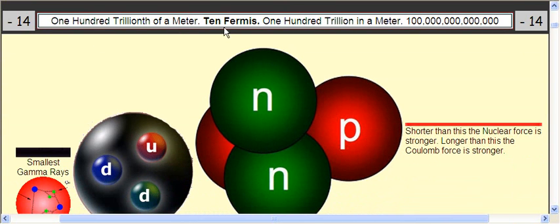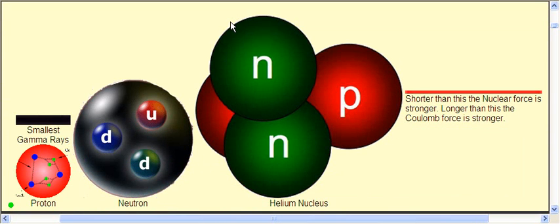One hundred trillionth of a meter — let's go to 10 fermis. That's the weak force range, and that's the helium. That's the proton. So if a proton can get that far away, then the range of the weak force goes away. It's kind of like the aura of the proton, but I haven't studied this in a while. The smallest gamma rays are this big, so very small.